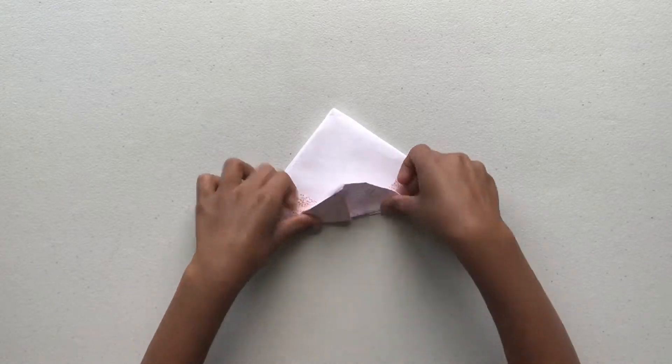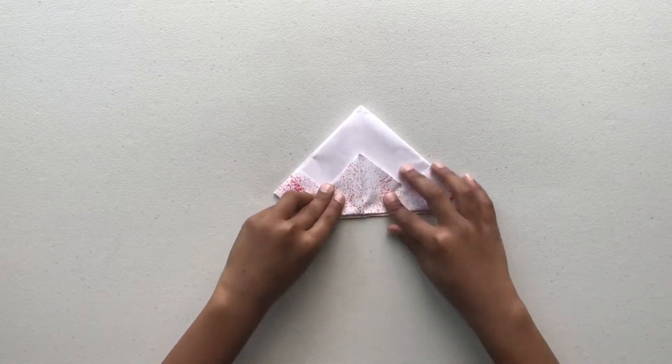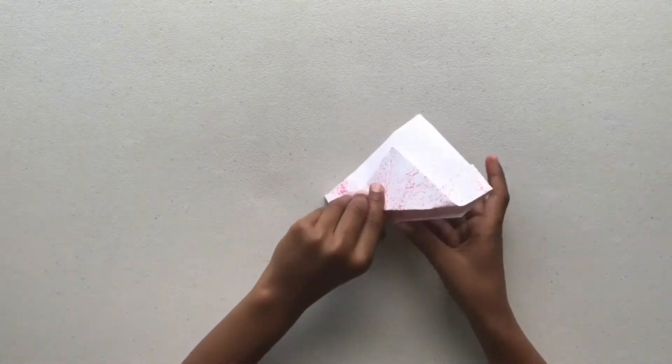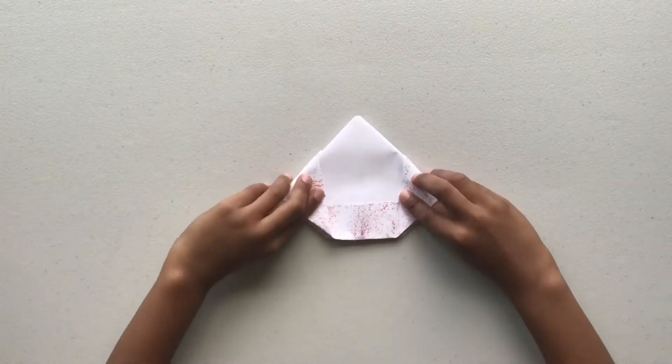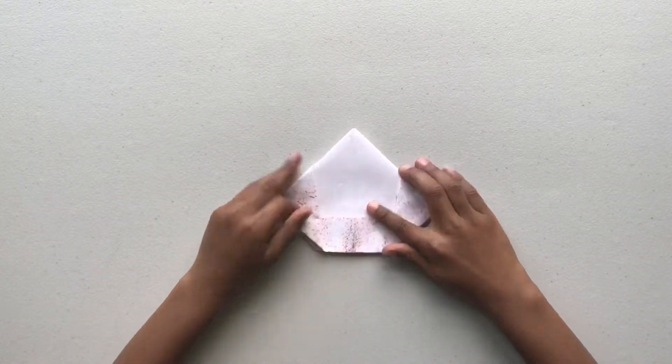Do the same thing on the other side. Open up the bottom and fold it into a pentagon. This is the last step of making your boat.